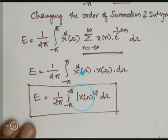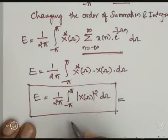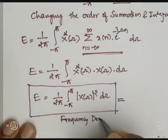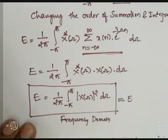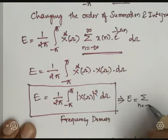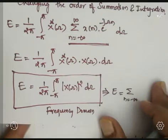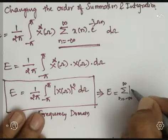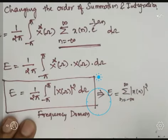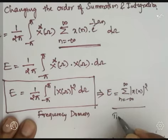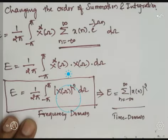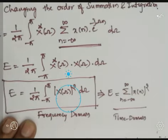This is the equation for finding the energy of the system in the frequency domain. This is equal in the time domain to summation n equal to minus infinity to plus infinity, mod of X of n squared. Likewise, we can calculate the energy of a given sequence in the time domain as well as in the frequency domain.